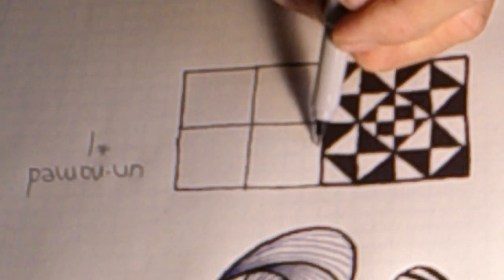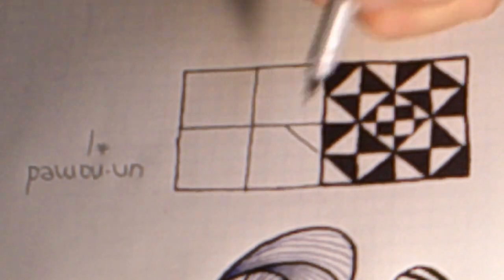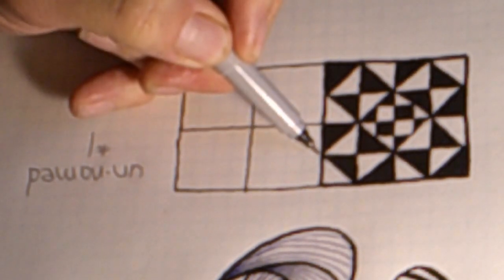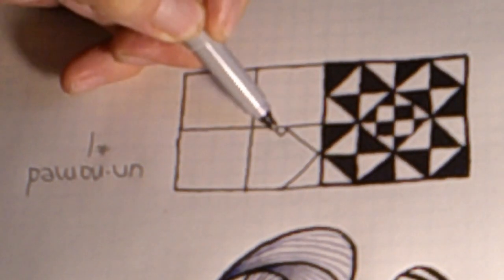On each one of the corners, we're going to go from the middle of each side to the middle of the side and draw a diagonal line. We'll do that the whole way around each one.